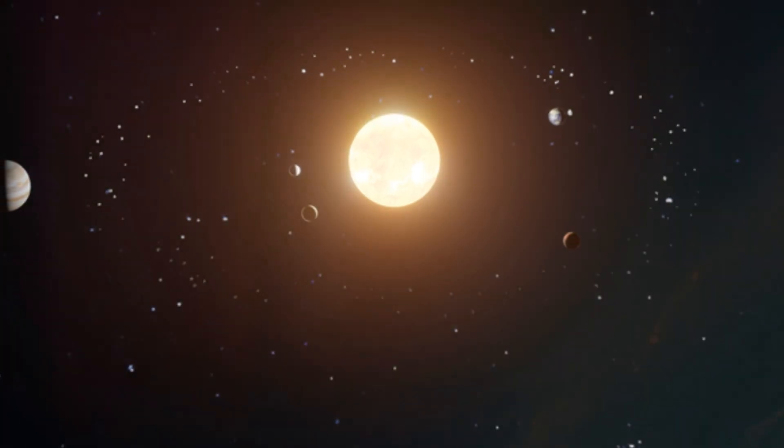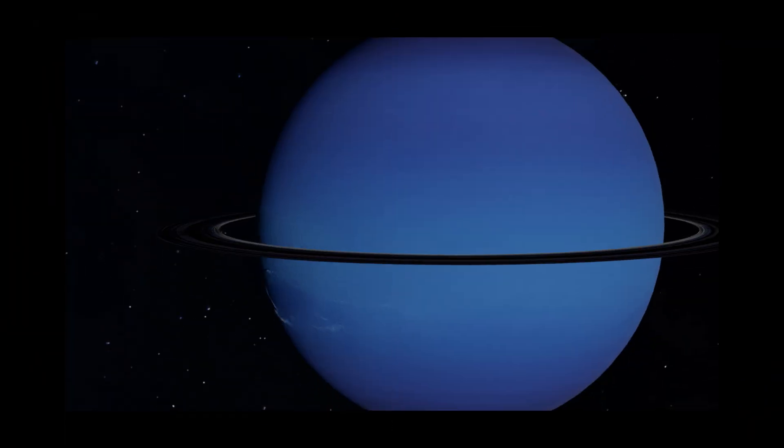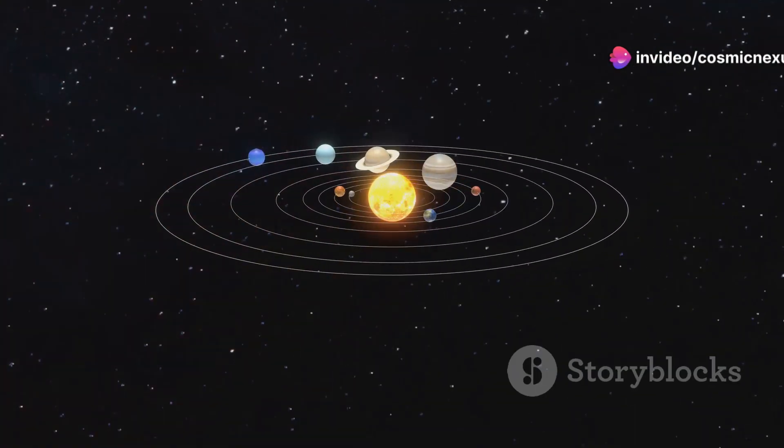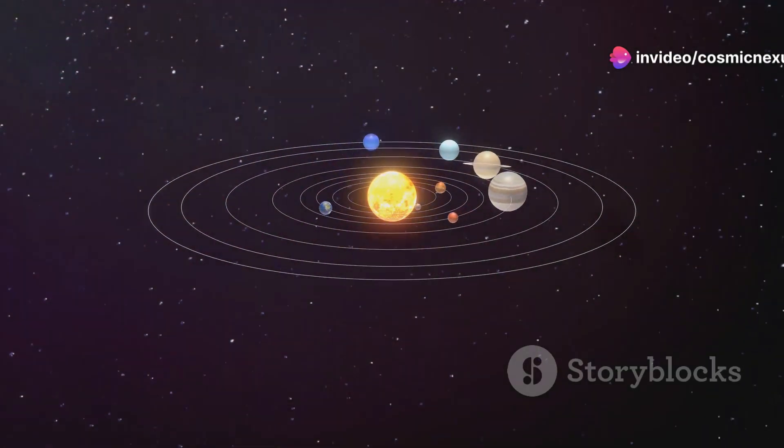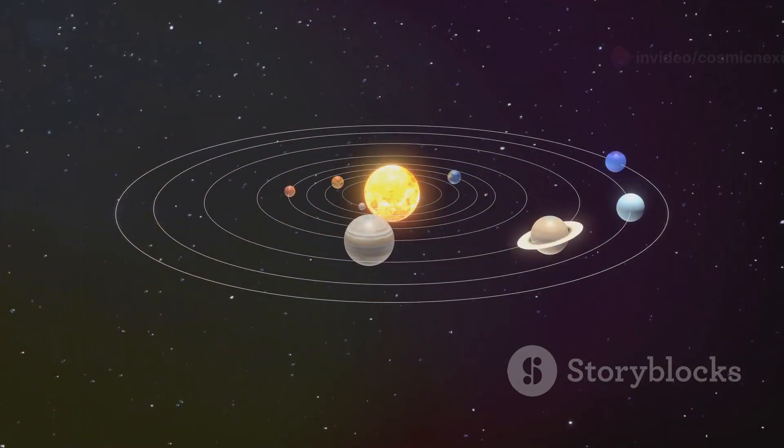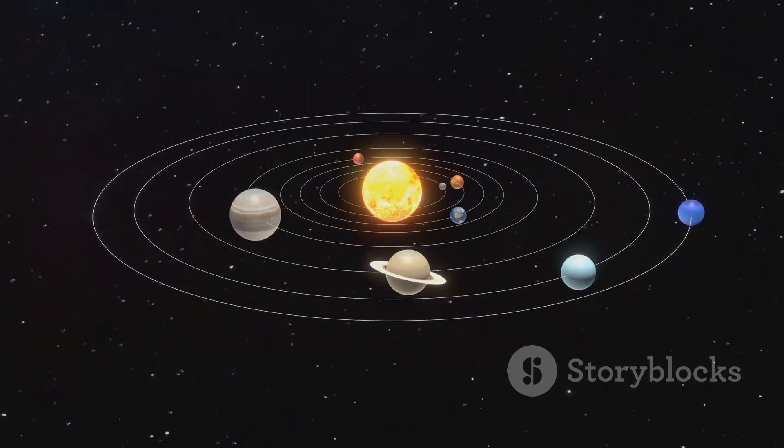For centuries, we believed that planets like our Earth orbited stars, a fundamental truth of the cosmos, a cosmic ballet of celestial objects gracefully moving around their radiant partners, each one in perfect harmony.